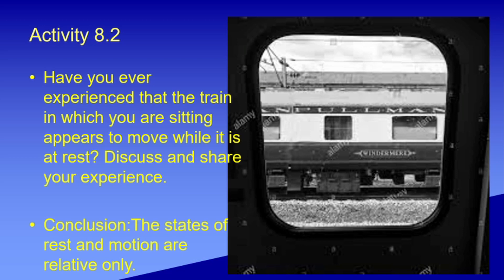The learning from this activity is that states of rest and motion are relative. When you look at something with different reference points, it may seem to be in different positions. For example, you sit in a bus and your friend is also sitting — with reference to each other, you both are at rest. But someone sitting outside sees both of you in motion. So your friend sees you at rest, the outside person sees you in motion. These are relative terms.